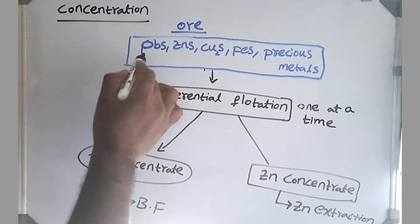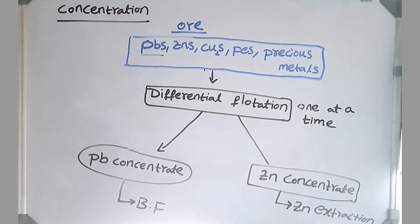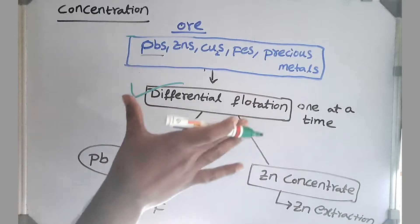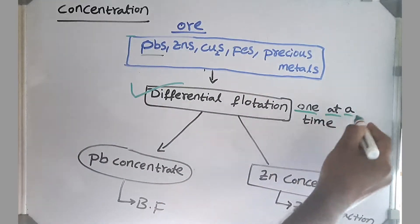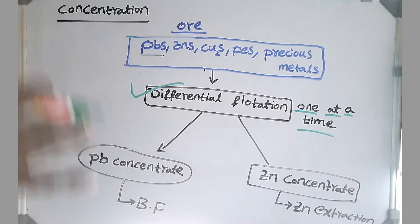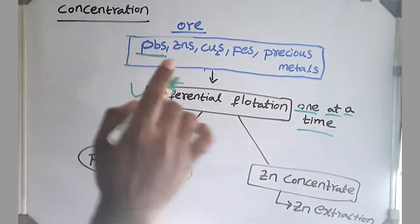We usually find all these sulfides—lead sulfide, zinc sulfide, copper sulfide, iron sulfide—all together in nature. So to separate the required sulfide from the ore, we have a special process called differential flotation. This helps in precipitating one at a time. Differential flotation means modifying the surface properties of these ore particles and making one ore to precipitate at a time.